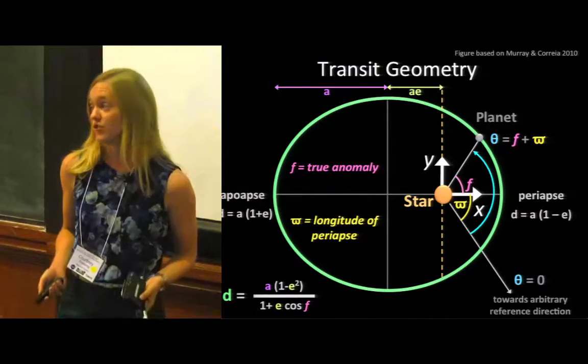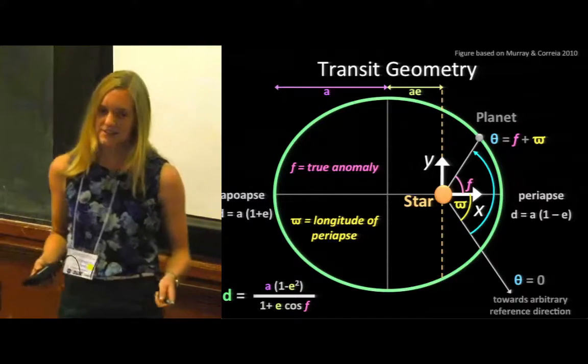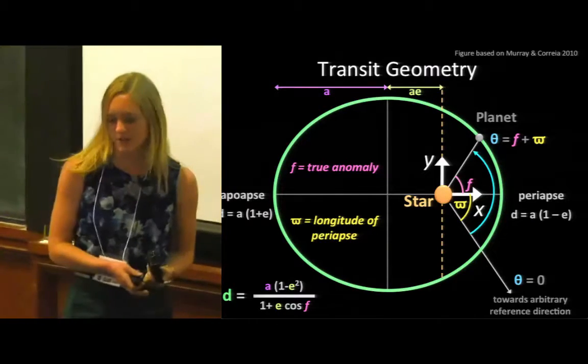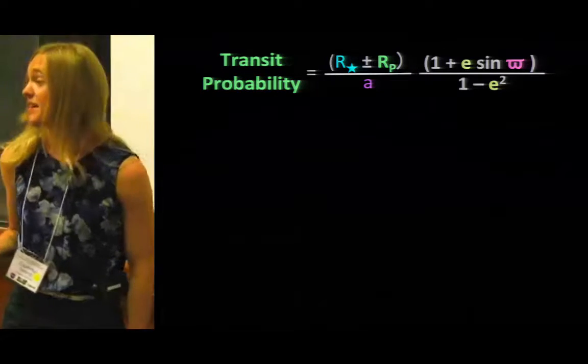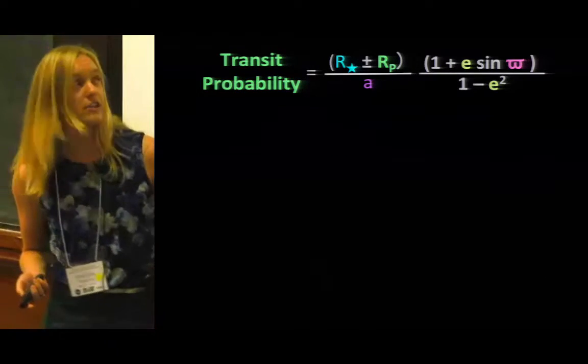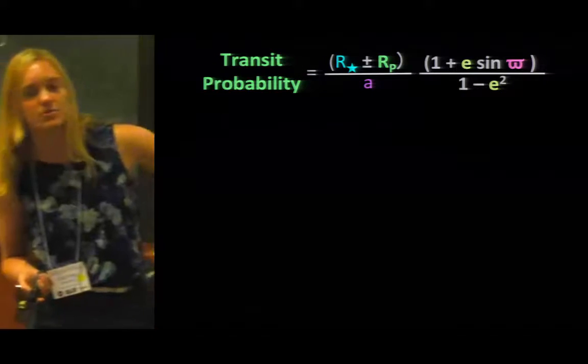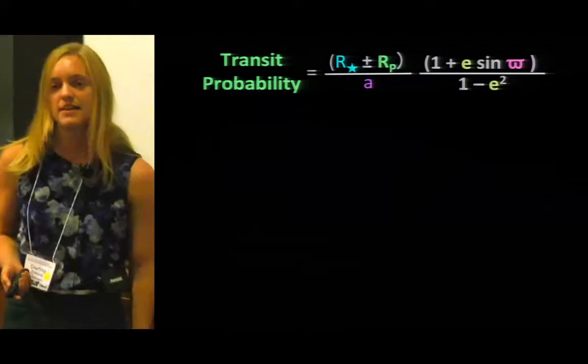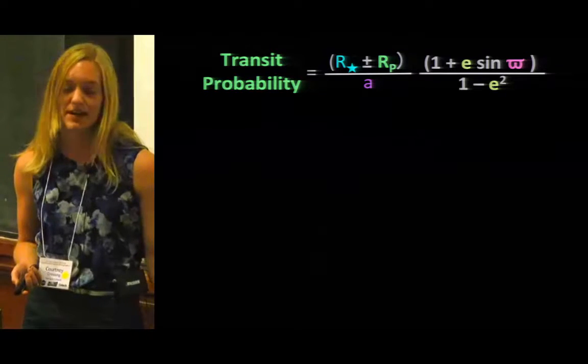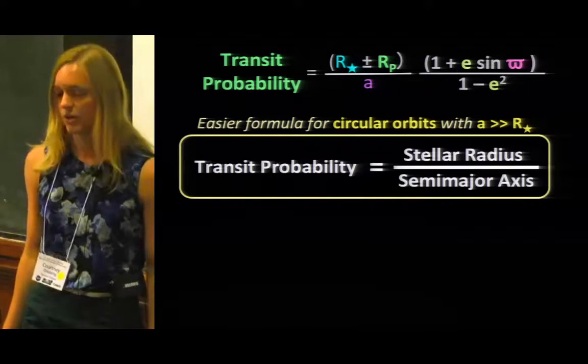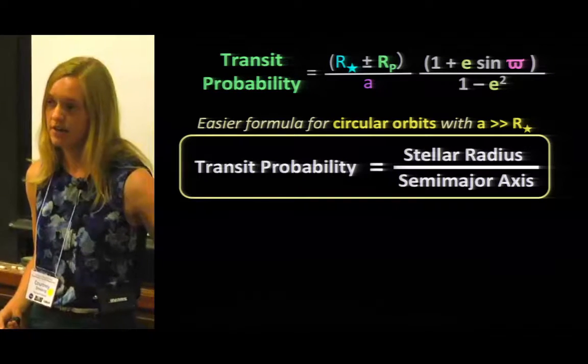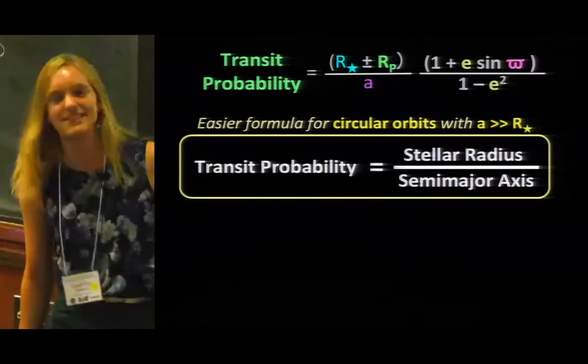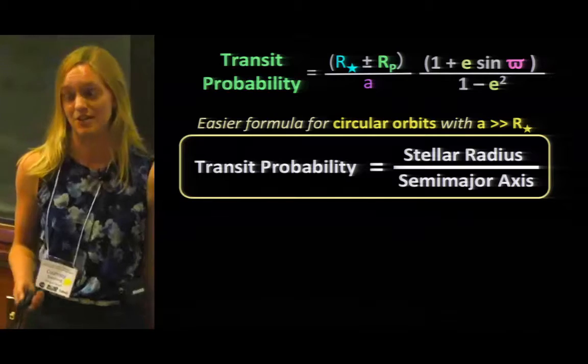And we can turn this into a transit probability. And if you want to learn more about how to do this and how to think about orbital geometries, I encourage you to check out Murray and Correia. We can now think about transit probability. And this is a longer expression where here on the top here you can either do plus R_P or minus R_P, depending on whether you're thinking about full transit events or grazing transit events. And if you are in a situation where perhaps you can make some simplifying assumptions, say you only care about planets in circular orbits where the planet is pretty far away from the star, there is an easier number for you to remember so you can jot it down at parties on cocktail napkins. And that number is that the transit probability is just the stellar radius over the semi-major axis.